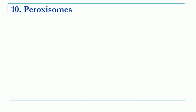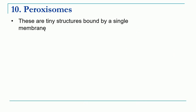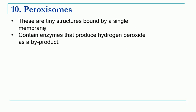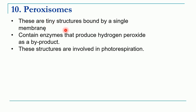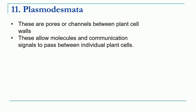The next organelle is peroxisomes. These are very tiny organelles with a single membrane, unlike other organelles which have double membranes. They contain certain hydrolytic enzymes which can break down molecules like hydrogen peroxide. These peroxisomes also take part in the process called photorespiration. Next are structures called plasmodesmata — these are pores or channels between plant cell walls. They allow communication between adjacent cells, so communication signals can pass between adjacent plant cells with the help of plasmodesmata.